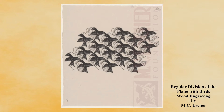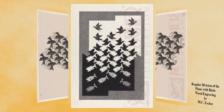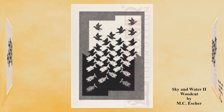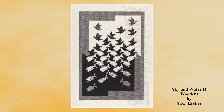He was fascinated by geographic designs and used them in his art. His art focused on mathematical concepts like infinity, reflection, and symmetry. With regards to negative and positive space, he loved to flip them in his drawings.